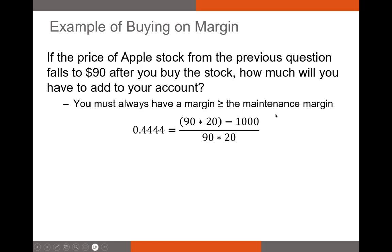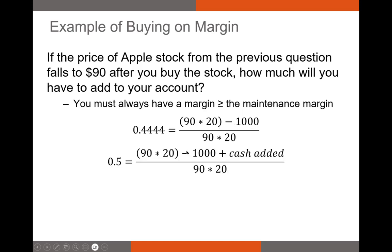Our current margin is 0.444 repeating, which is lower than our 50% maintenance margin, so we're going to have to add capital or adjust our position to get back to at least 50% margin. We can solve for the cash added: we take $1,800 over to the other side to get $900, then $1,800 minus $1,000 gives us $800. So $900 minus $800 gives us a cash added of $100 — in order to get back to the maintenance margin, we need to add $100.